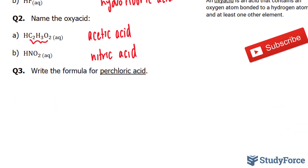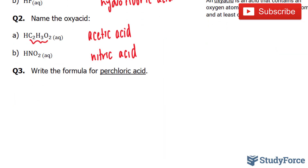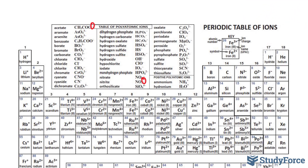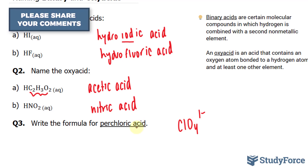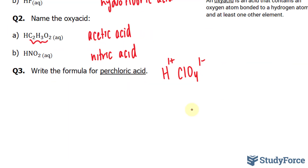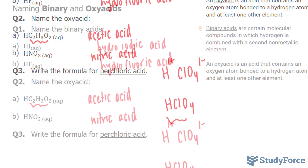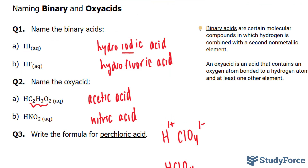Finally, in question three, they want us to write the formula for perchloric acid. If you look at the list of polyatomic ions, you'll notice that perchlorate is ClO4 negative. Given that this compound contains oxygen and it's an acid, we know that it will combine with hydrogen. Hydrogen has a charge of plus one. Criss-crossing these charges, we end up with HClO4. This represents the formula of perchloric acid. And that is how to name binary acids and oxy acids.